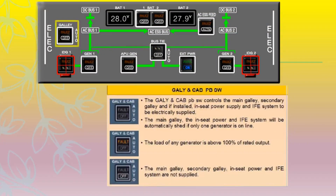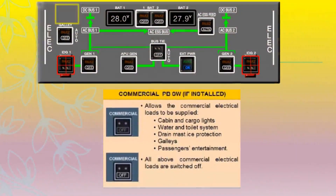The galley and cabin pushbutton switch controls the main galley, secondary galley, and if installed, the in-seat power supply and in-flight entertainment system. When no lights are on, the main galley, in-seat power, and in-flight entertainment system will be automatically shed if only one generator is online. The fault light illuminates when the load of any generator is above 100% of rated output. The off light illuminates when these systems are not supplied.